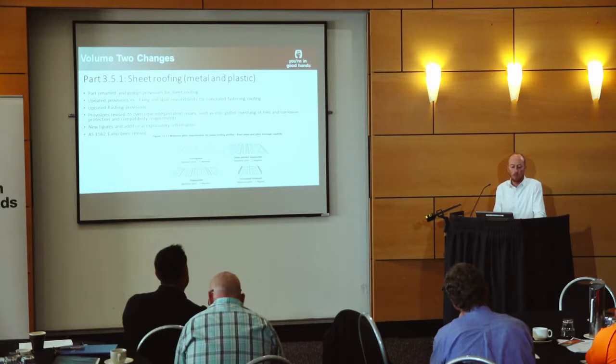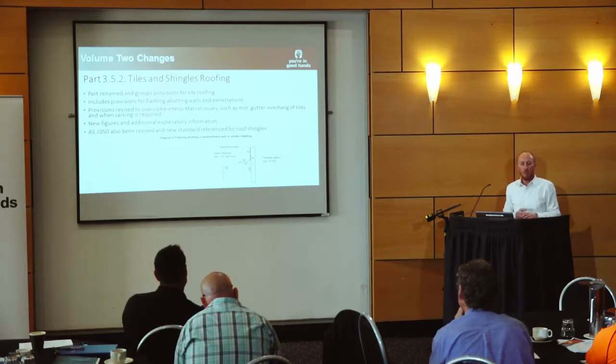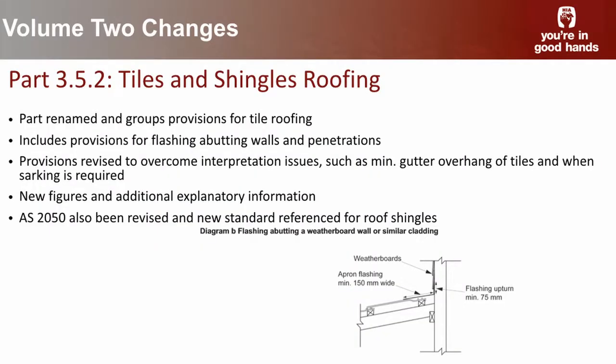A common theme throughout Volume 2 is that a lot more figures and explanatory information have been incorporated, with updates and revisions to flashing requirements — some of which were written in 1996 and hadn't kept pace with current practice. Similarly, Part 3.5.2 for roof tiles and shingles was previously muddled together with metal sheet roofing but is now in its own separate part. It now captures a new roof slates and shingles standard — the previously referenced standard was an American one that hadn't been published for ten years.